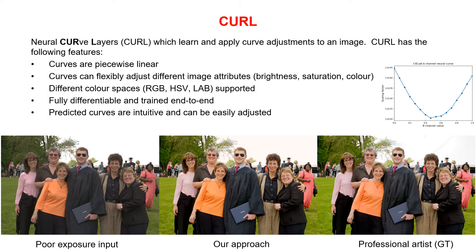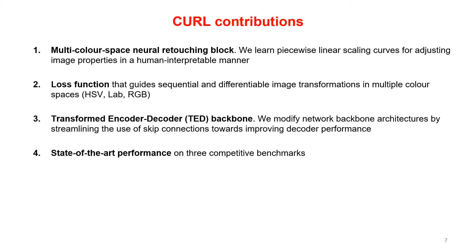CURL consists of neural curve layers that perform global image enhancement. The neural curve layers are piecewise linear, consisting of 16 control points that are learned by the neural network. The curves are implemented as scaling curves and can flexibly adjust different image properties like brightness, saturation, and color. We estimate curves in three successive color spaces to leverage advantages of these different color representations. The curves are fully differentiable and trained in an end-to-end fashion.